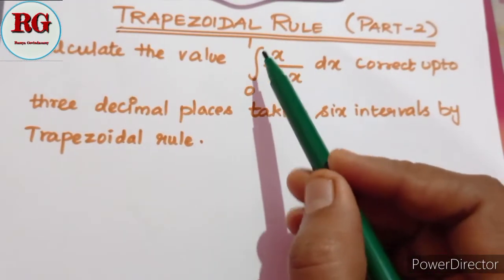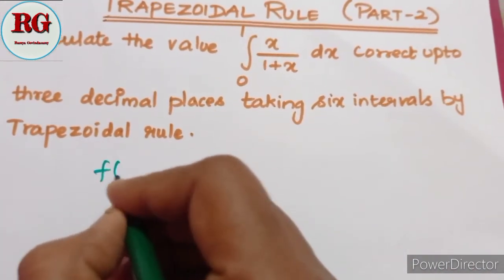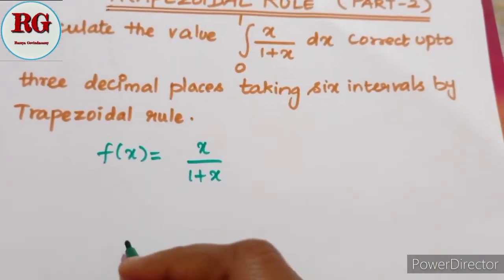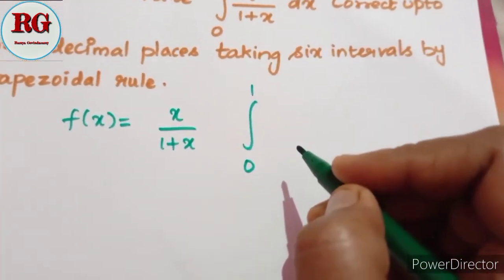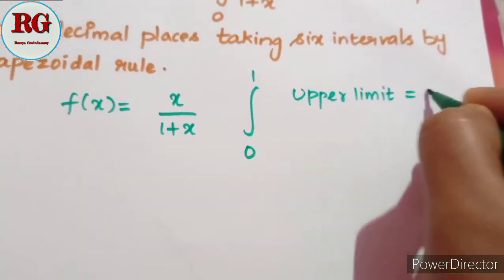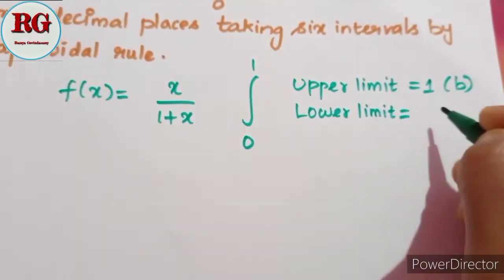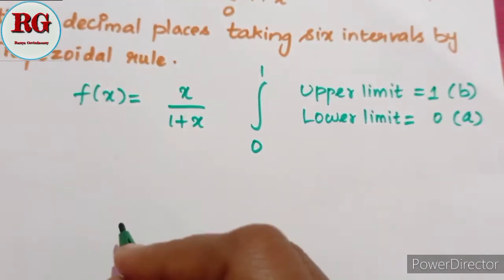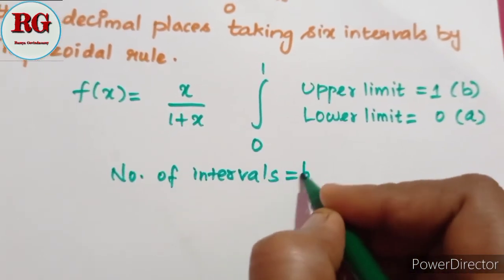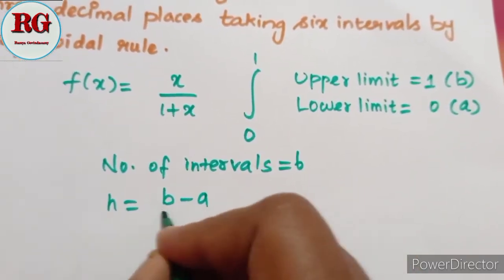If we look at the intervals from 0 to 1, f(x) is given by x divided by (1 plus x). The upper limit is 1, which is the b value. The lower limit is 0, which is the a value. The number of intervals is 6. The formula for h is: h equals (b minus a) divided by n.